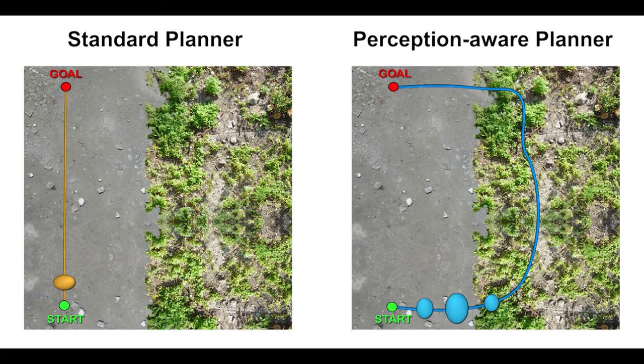By contrast, we propose to select optimal trajectories that minimize the pose uncertainty of vision-based localization systems by also exploiting the scene texture.